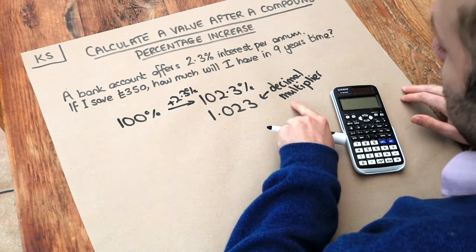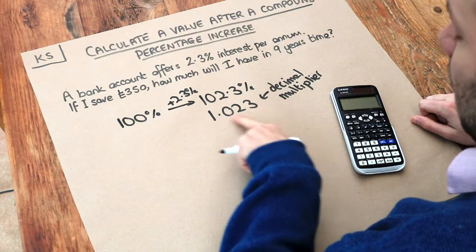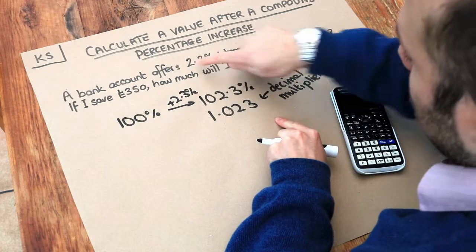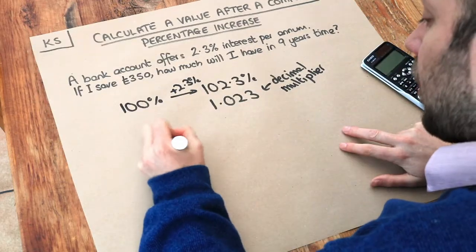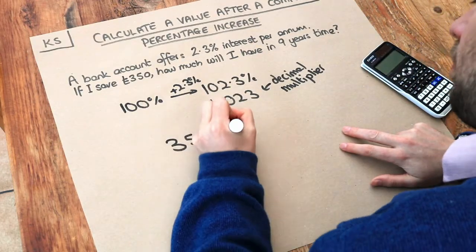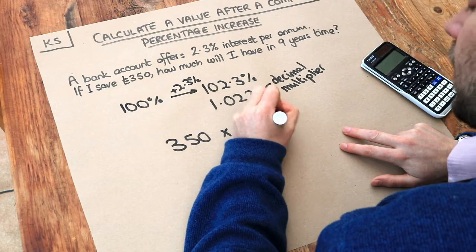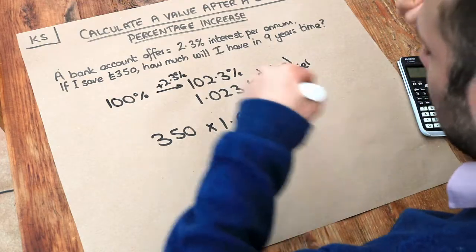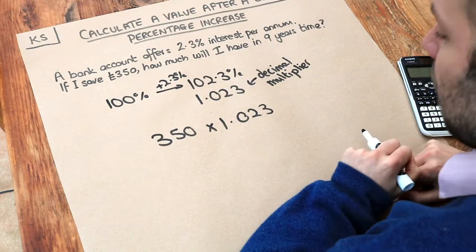And it's called a decimal multiplier because we can multiply by this decimal to increase something by 2.3%. So if I do £350, if I times it by 1.023, if you think about it, timesing by a number just slightly more than 1 is going to slightly increase it and we'll get that extra 2.3%.